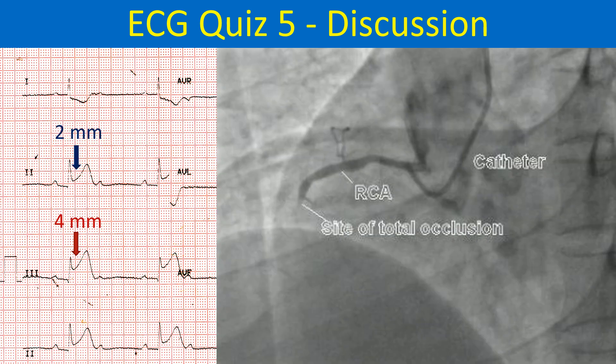ST elevation is significantly more in lead 3 than in lead 2, suggesting that it is due to an occlusion of the right coronary artery rather than the left circumflex coronary artery.